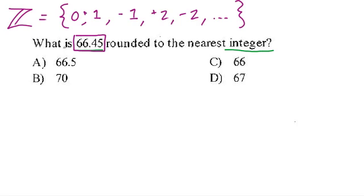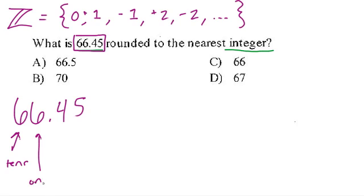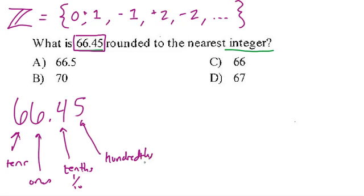So how do we do this? Well, 66.45 — this is our tens place, this is our ones place, this is our tenths place (or one-tenth), and this is the number of hundredths (or one one-hundredth). We need to use these numbers to round to the nearest whole number, which is this number right here.